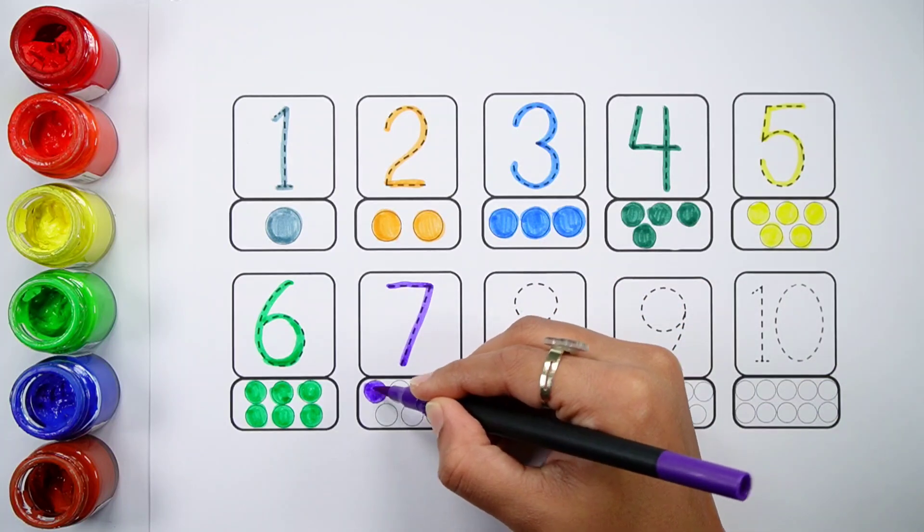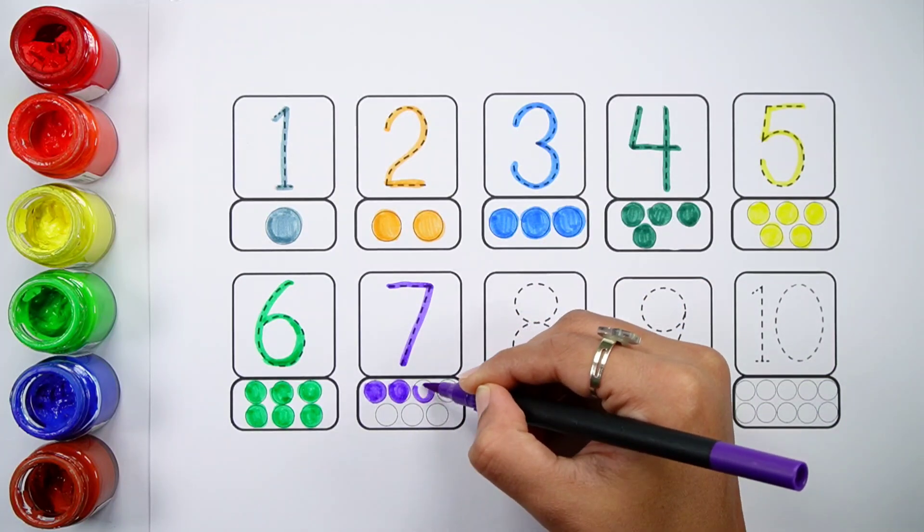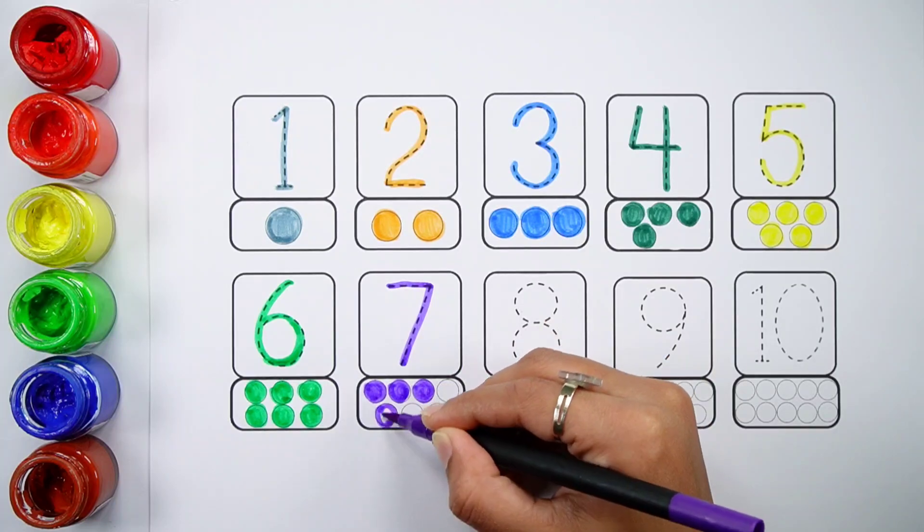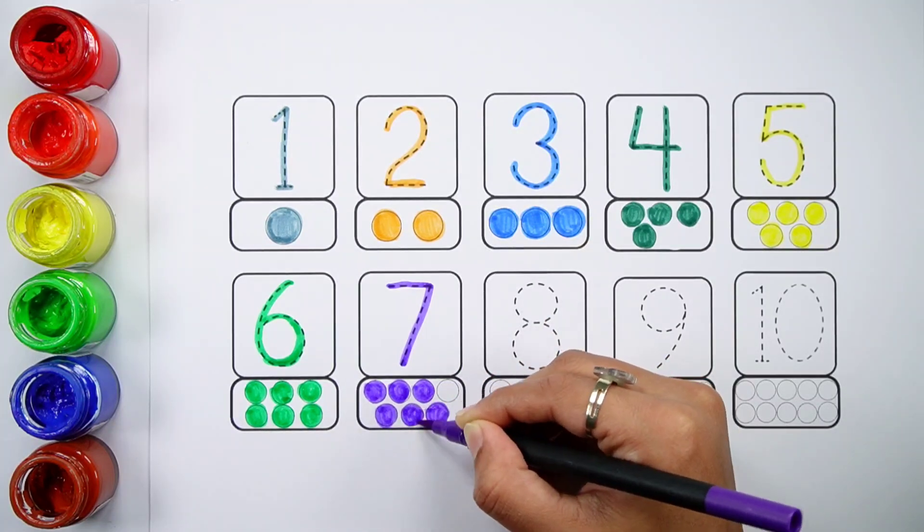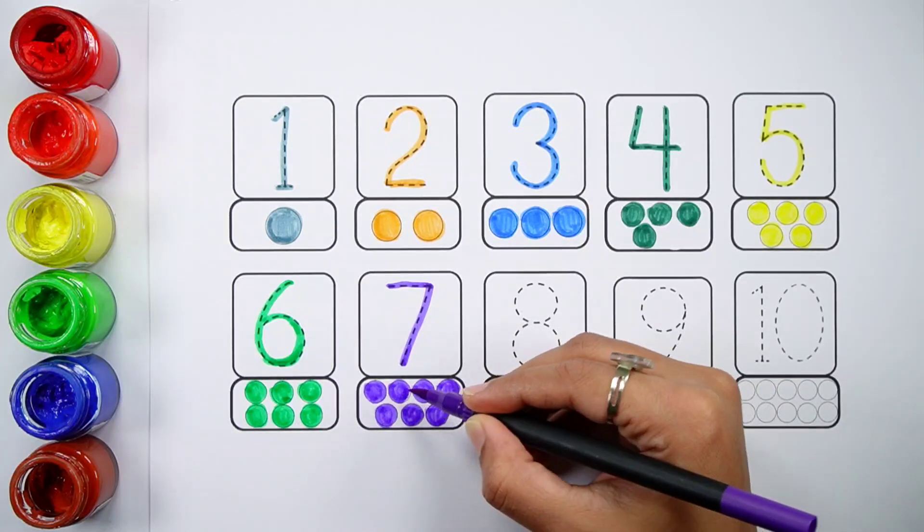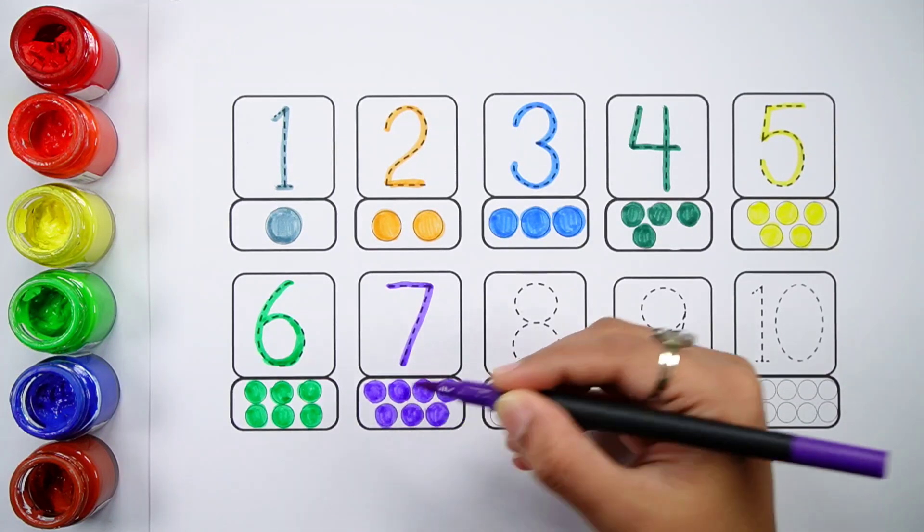Number seven. One, two, three, four, five, six, seven. Seven balls.